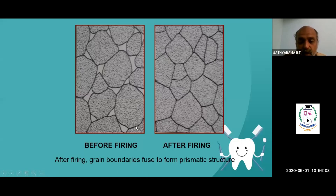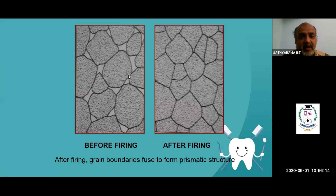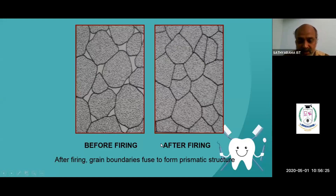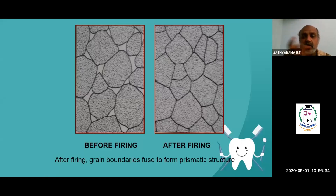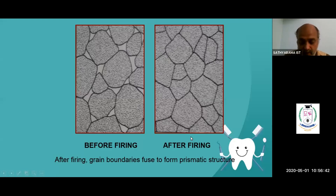After firing, the ceramic fuses and forms what is called a prismatic structure. Before firing, you can see the ceramic molecules with water content (white spaces) in between. After firing, the components are closely packed, and you see a prismatic structure formed.